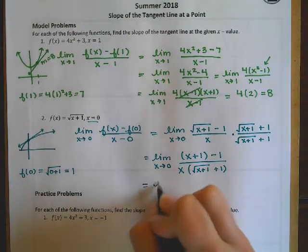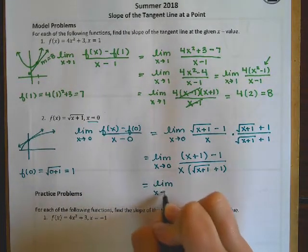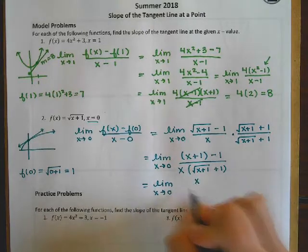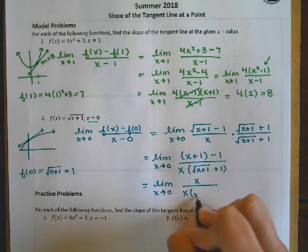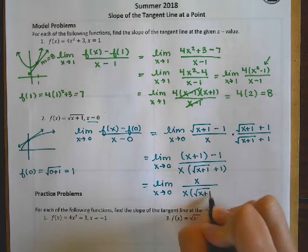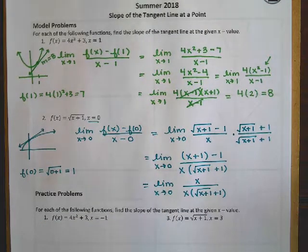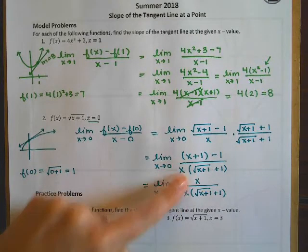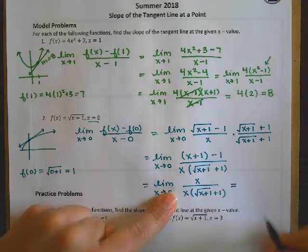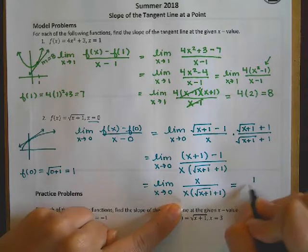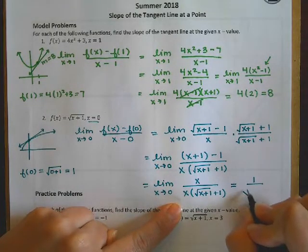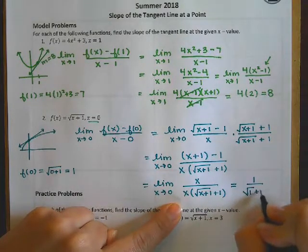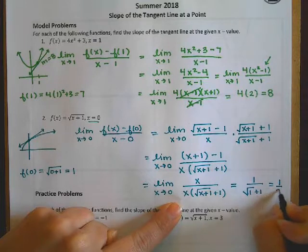So my 1's cancel, and I'm left with x over x times that piece. I have x over x, which again, if that's what I'm plugging in, that's what's causing my 0 over 0 to happen. And so once I get rid of those, I get 1 over square root of 1 plus 1, which gives me 1 half.